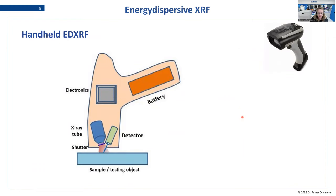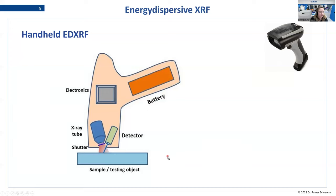A very nice option for EDXRF devices is a handheld option. It looks a bit like a gun with a battery in the handle, electronics, a small X-ray tube, and a very small detector. You can directly point it onto the sample or testing object. This is very good when you have testing objects that are very large and cannot fit into a sample holder, or if you need to measure on site and cannot move the sample. For these kinds of applications, handheld EDXRF is used.